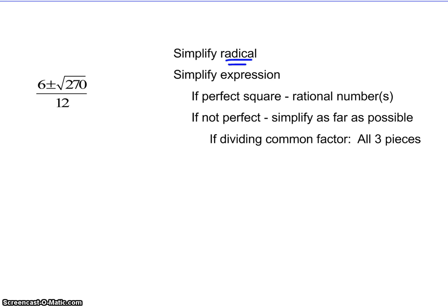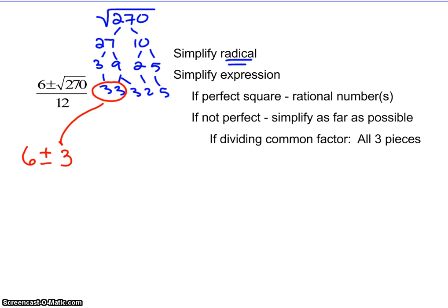If we look at another example, simplify the square root of 270. Sometimes you need to go to the side to do this, and I'm going to go quicker by using 10. What I find out is I only have the one pair here. So what I have is 6 ± and I got the three that's a pair, so I'm taking it out. I'm going to take all these singles—the three, the two, and the five—and multiply those together, still all over 12.